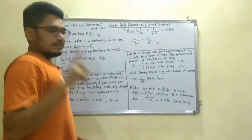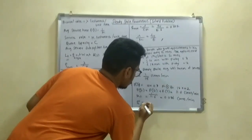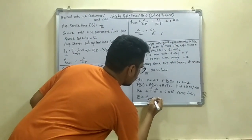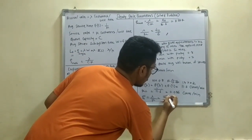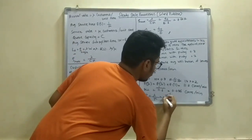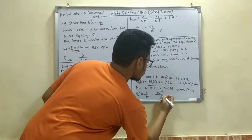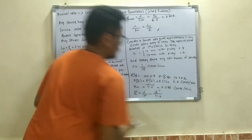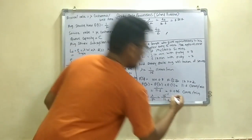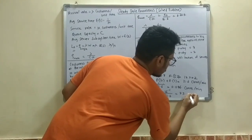Now since this is the single server queuing system, you will use lambda by mu. And lambda is 1 by 15, so I will write it as 15 inverse divided by that is 11.6. So the answer comes out to be 73 point some value.